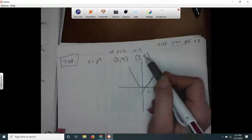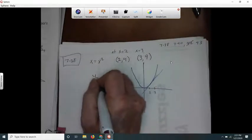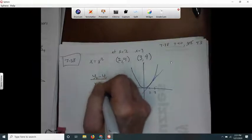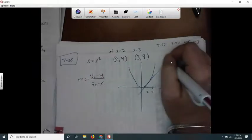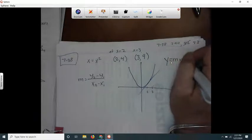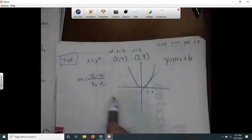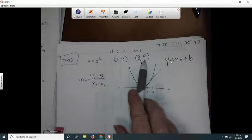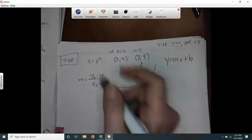It's like y2 minus y1 over x2 minus x1, and we got y equals mx plus b. So y2, that's 9 minus 4, so that's going to be 5.